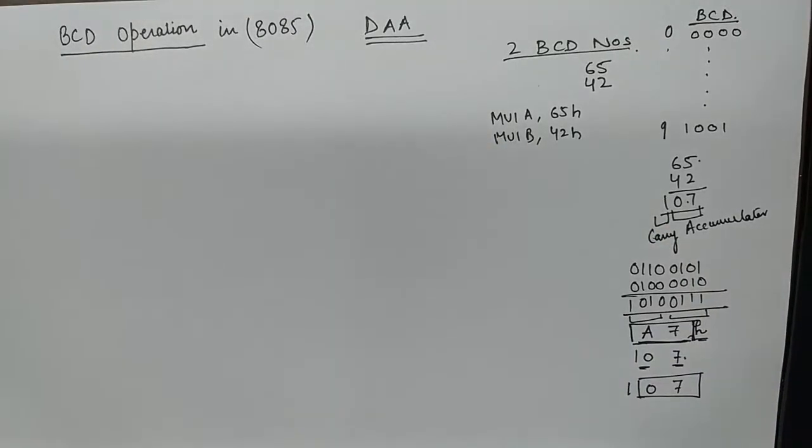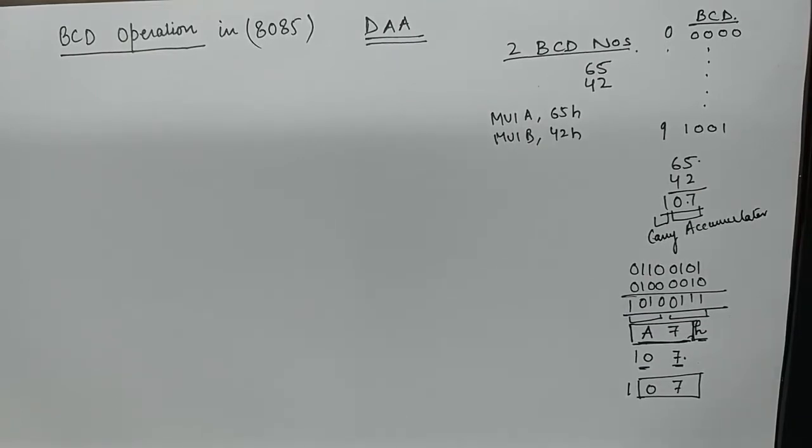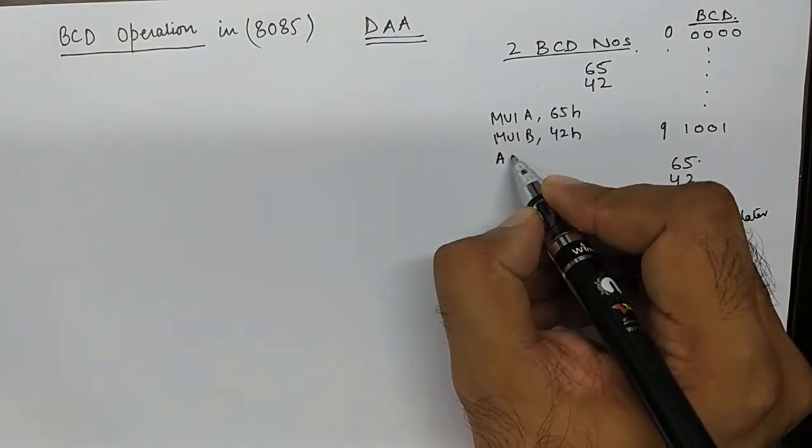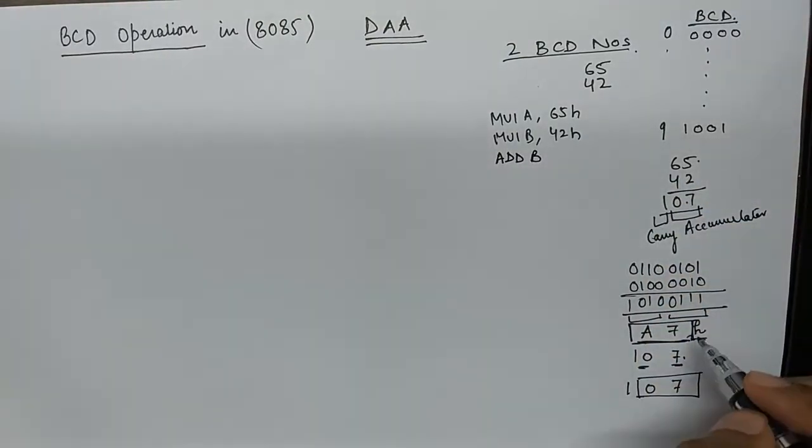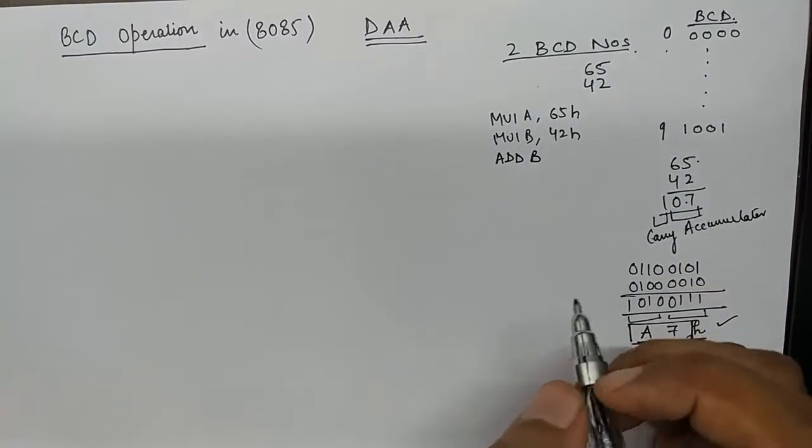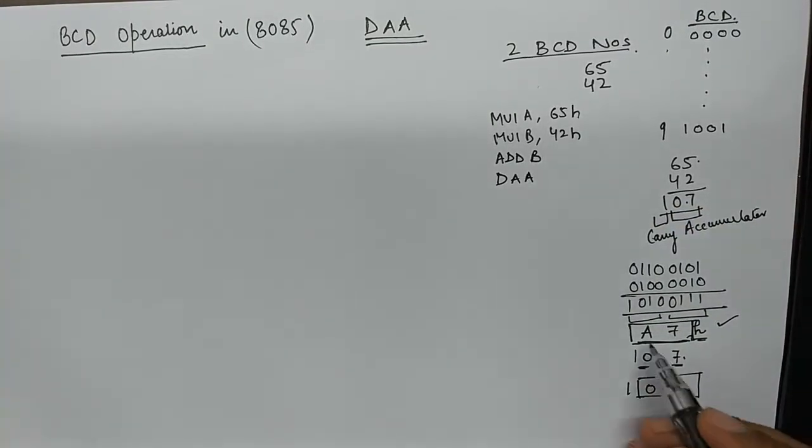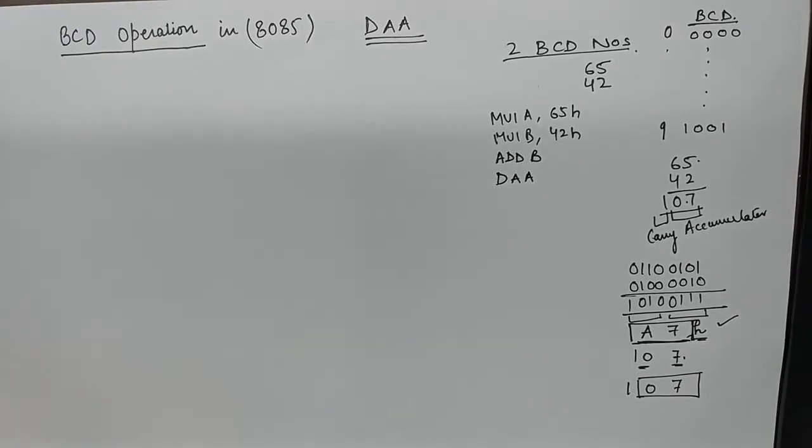In order to convert this A7H, which is an incorrect notation of BCD, into 107H, we use an instruction DAA that automatically adjusts the accumulator. If a number is a non-notational BCD number, it converts it automatically into a BCD number. For example, we will use the instruction ADD B. It will perform this operation and give a result A7 into accumulator. Then we will perform DAA, and DAA will automatically adjust A7 or convert A7 into 107. In this video I wish to clarify the fundamental behind the DAA instruction.